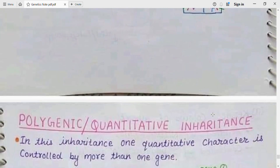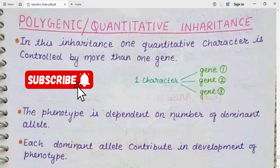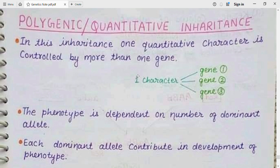Now we will discuss polygenic inheritance, which is an example of quantitative inheritance. 'Poly' means many, and 'genic' means genes. When many genes collectively control a single character, it is called polygenic inheritance. In this inheritance, one quantitative character is controlled by more than one gene — for example, a single character controlled by gene 1, gene 2, and gene 3.